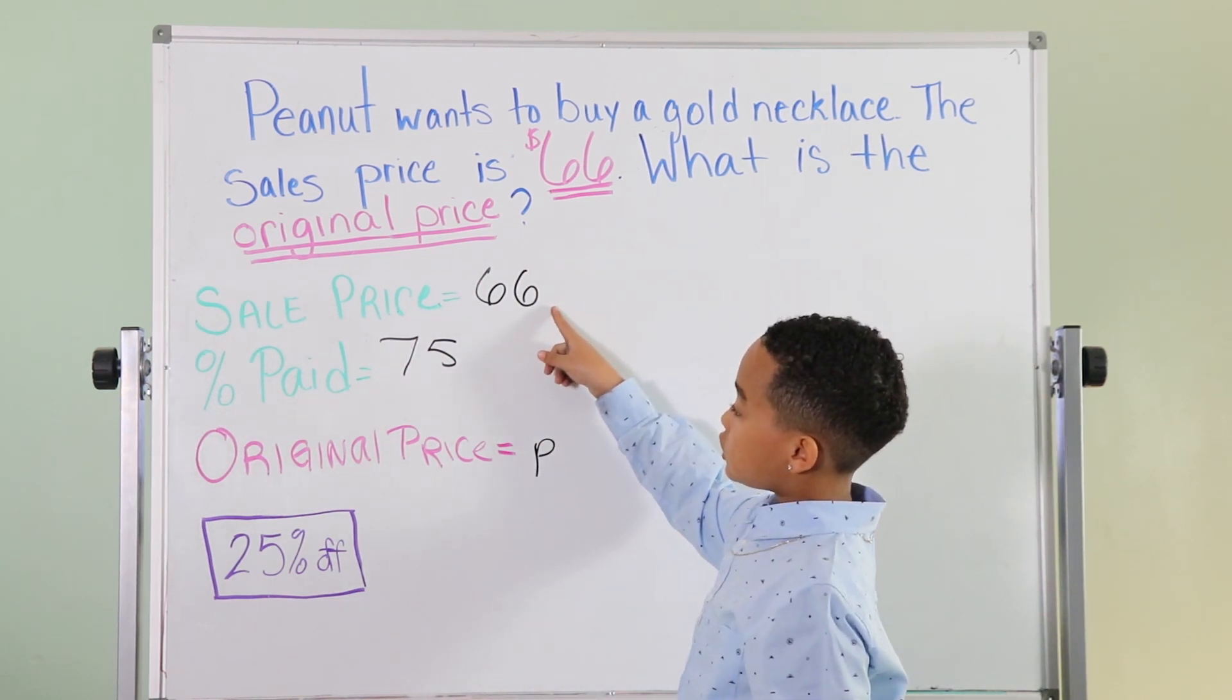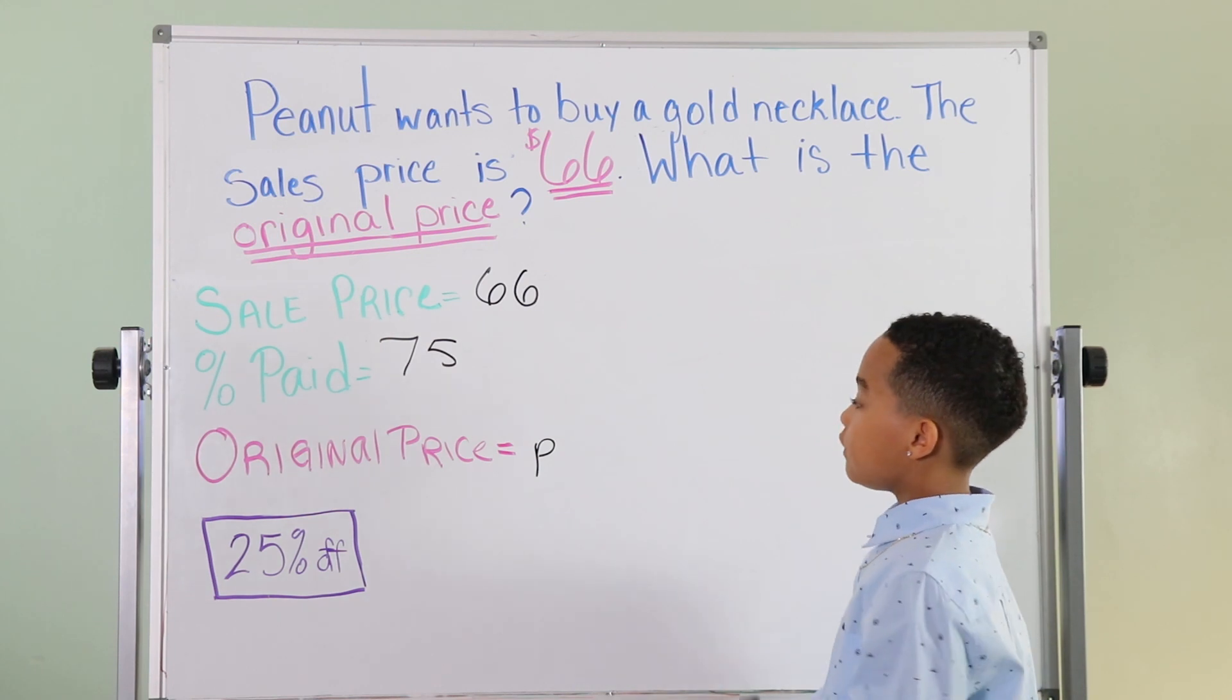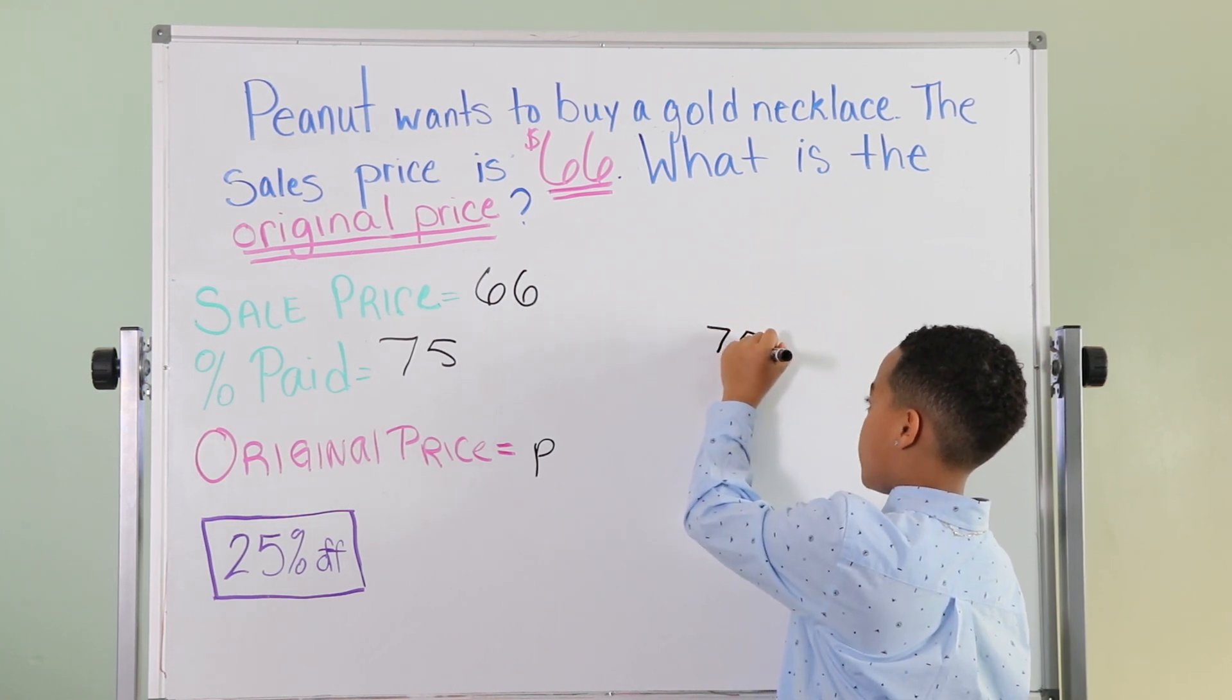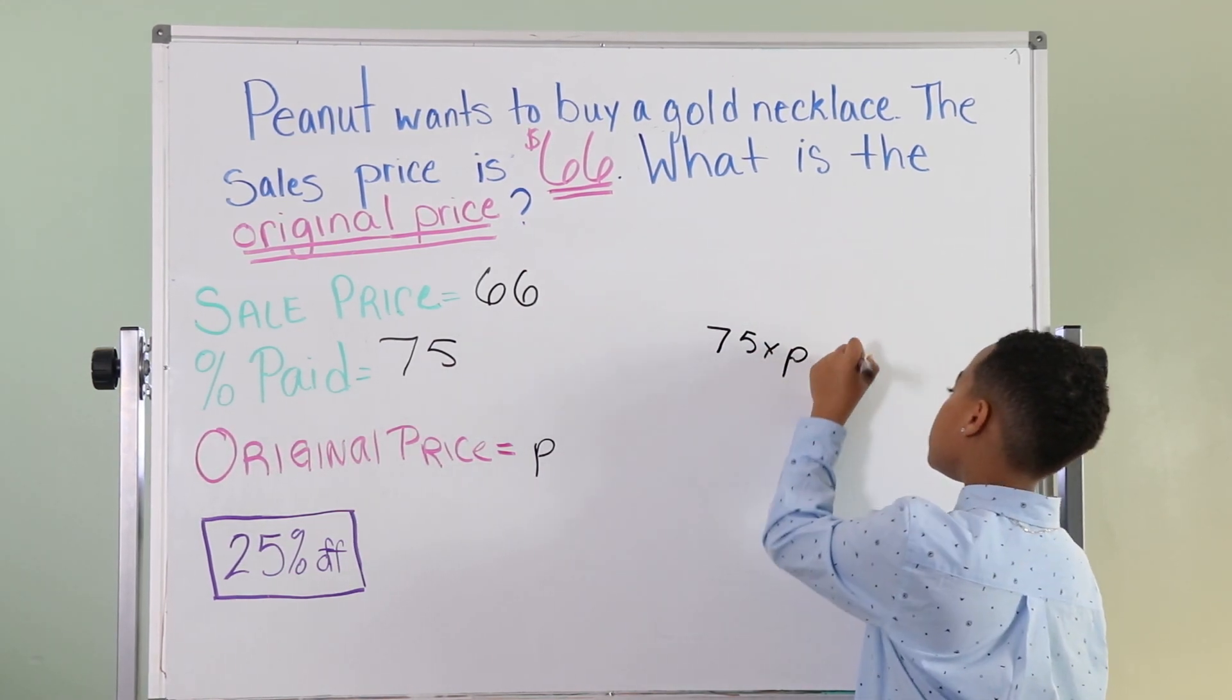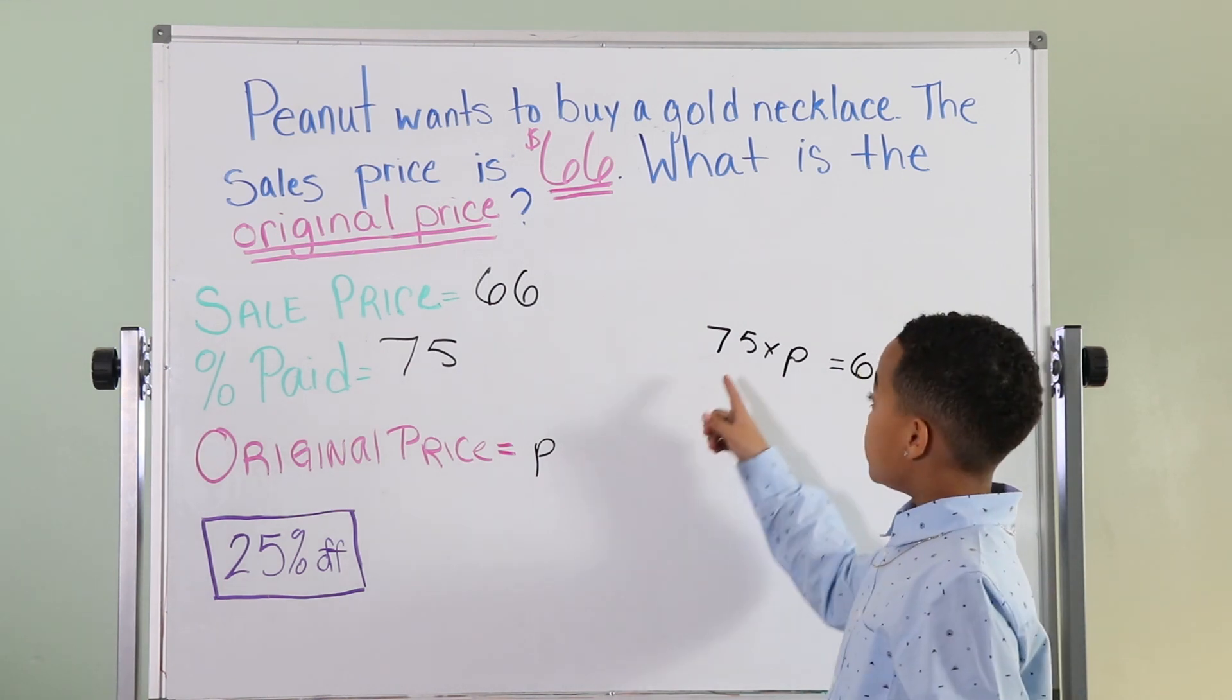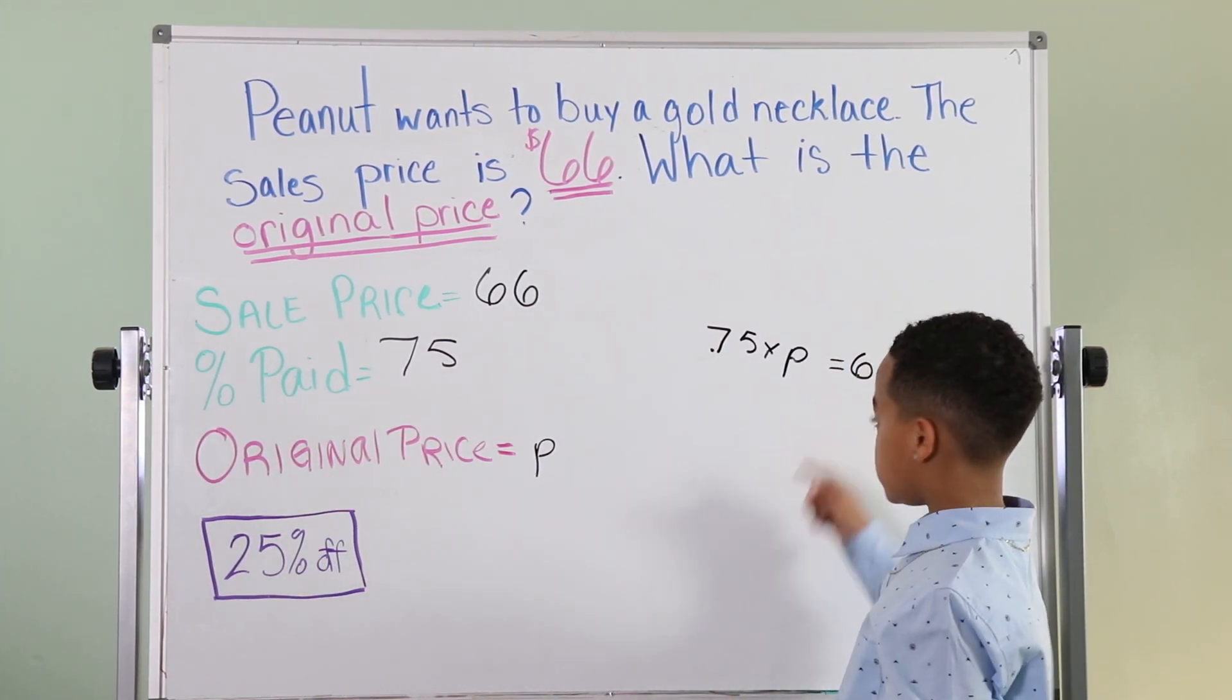$66 is 75% of the original price. So the first thing we're going to do is times 75 by P equals 66, the sales price. Now, the first thing we're going to do is move the decimal over two spots. So that will be right here. 0.75 times P equals 66.